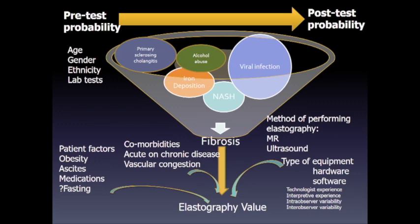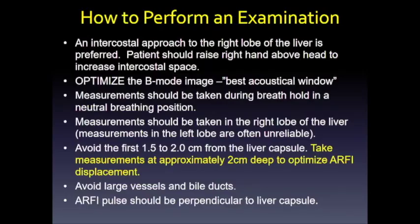A slide from the SRU consensus panel details everything we need to know. All diseases that lead to fibrosis and cirrhosis must be considered, along with pretest and post-test probability. Age, gender, ethnicity, and lab tests influence values. Patient factors such as obesity, ascites, medications, fasting, comorbidities — acute and chronic disease, vascular congestion — all matter, as do differences between MR and ultrasound vendors, software, hardware, and examiner experience. A very strict protocol is needed for consistent results.